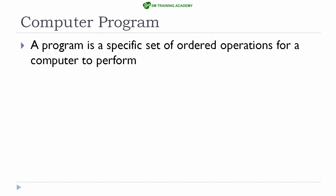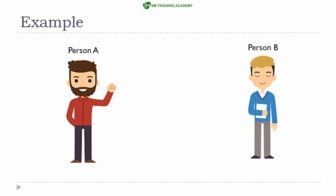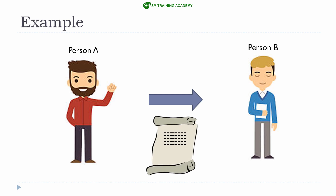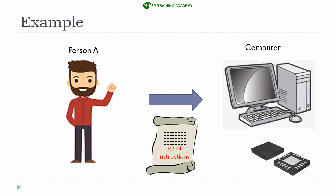Let us understand what is a program and the basic steps involved in executing a program with an example. Assume there is a person A and a person B. Person A requires some specific task to be performed with the help of person B. So what person A does is pick up a piece of paper, write down all the instructions and the required task, and pass that piece of paper to person B. In this example, if you replace person B with a computer or a microcontroller, the piece of paper with the set of instructions is nothing but the program.